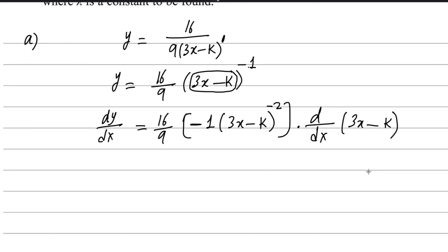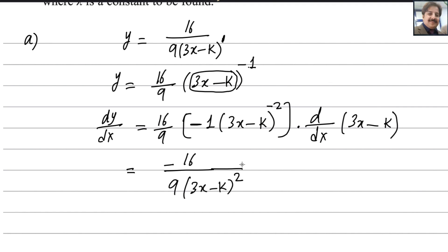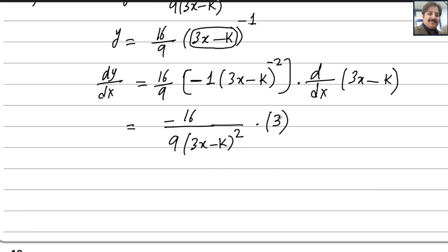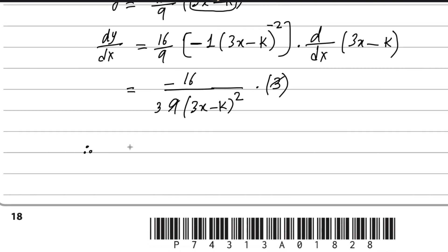Now simplify this. Take the negative power down, so it will be minus 16 over 9 into 3x minus k to the power 2 in the denominator. Multiply by the derivative of the inner function: the derivative of 3x is 3, and k is constant so its derivative is 0, giving only 3. Simplify 3 over 9 to get 3. Therefore, our final answer is dy by dx equals minus 16 over 3 into 3x minus k whole squared. This is the answer for the first part.